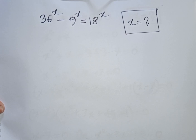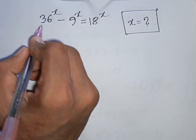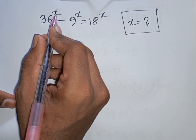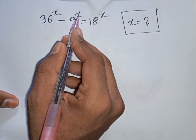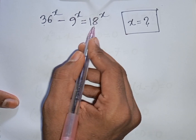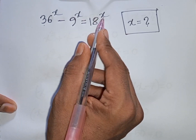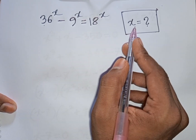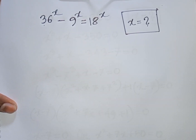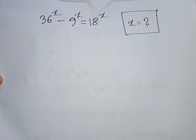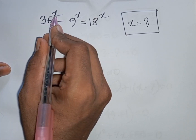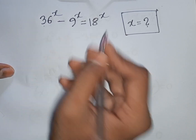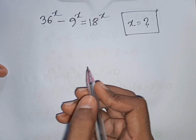How to solve 36^x minus 9^x equals 18^x. Find the value of x. First, we divide both sides by 36^x.